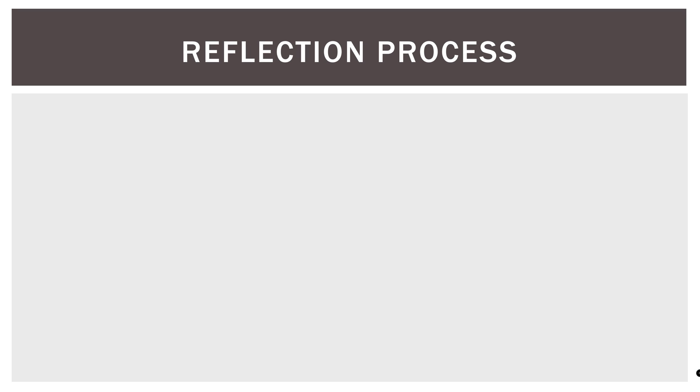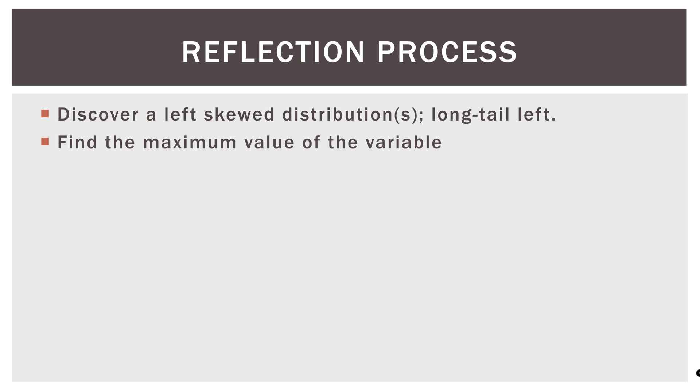Now let's discuss the basic reflection process. First, we discover a left skewed distribution or distributions, meaning long tail to the left. Then we find the maximum value of the variable. So whatever the highest numerical value is in that variable. Then we add one to each observation. And I'll put an asterisk there by the word one, because it doesn't have to be one. But in this case, we'll use one as an example. And I will talk about this more here in a second.